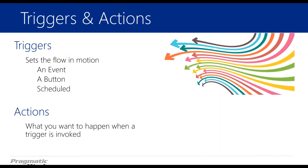The different parts of a flow — we have triggers and actions; those are the two main core pieces. The trigger is exactly what it sounds like: it sets the flow in motion and gets it started. It could be multiple things — it could be an event, a button, or a scheduled trigger.